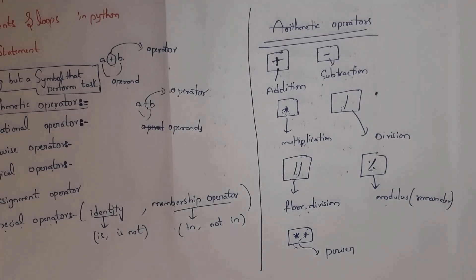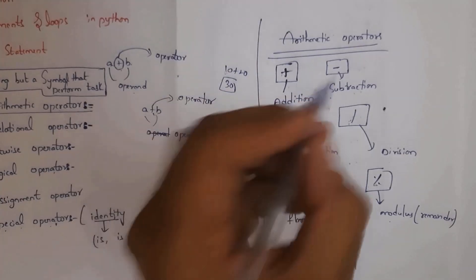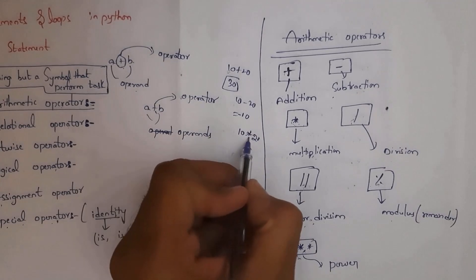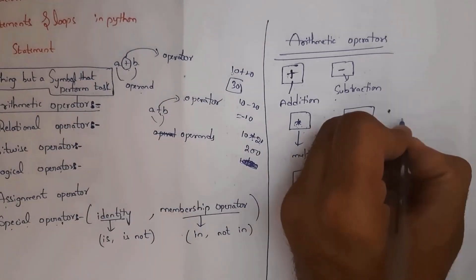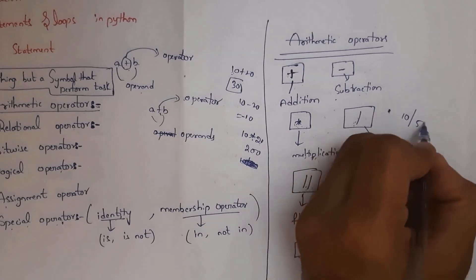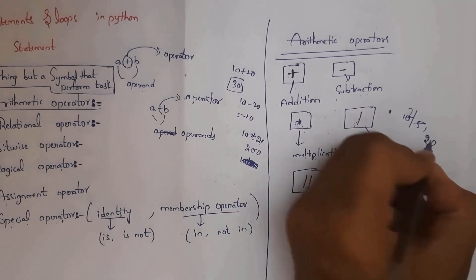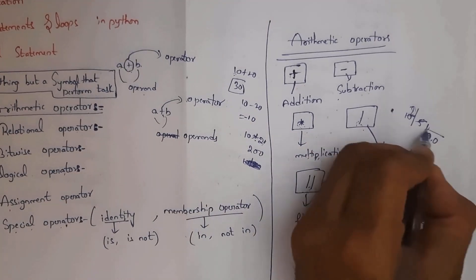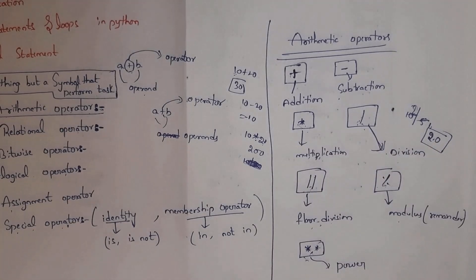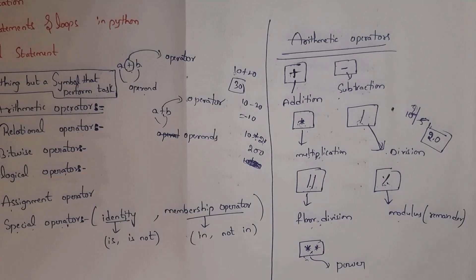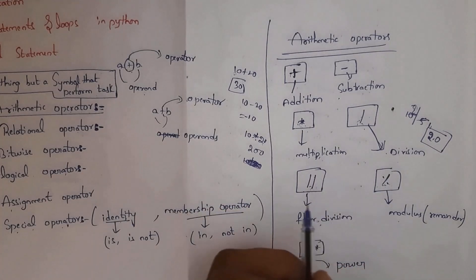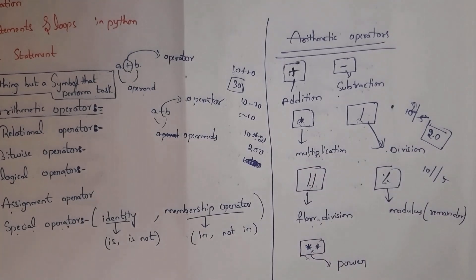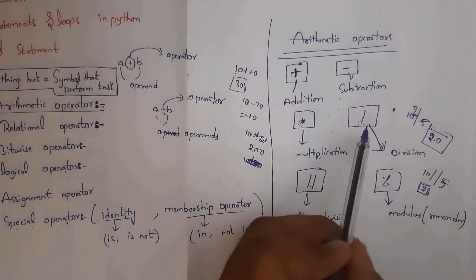For addition, 10 + 20 = 30. For subtraction, 10 - 20 = -10. For multiplication, 10 * 20 = 200. For division, 10 / 5 gives output 2.0 — division represents data as a float value. If you want an integer output, use floor division with double slash: 10 // 5 gives output 2.